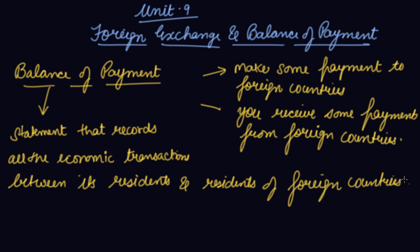It is same as the account we make. It is a statement of how much money has gone out from the country and how much money the country has received from foreign countries. Balance of Payment is a statement of accounts showing how much it has received from outside and how much payment it has made to other countries.